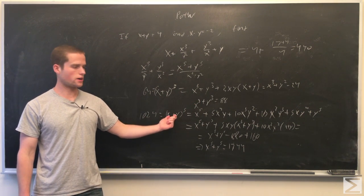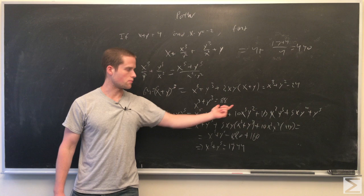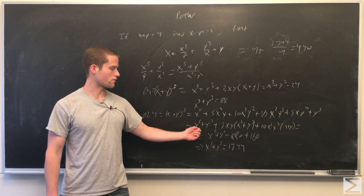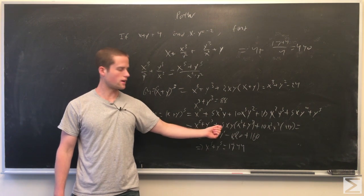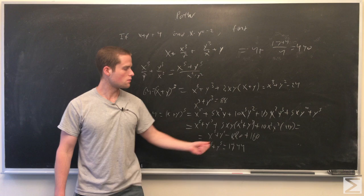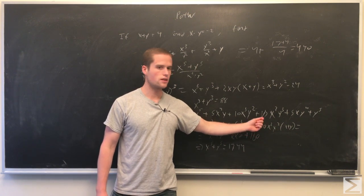Next we're going to take the fifth power of x plus y, so that gives us some terms. Grouping them together we get x to the fifth plus y to the fifth plus 5xy times x cubed plus y cubed plus 10x squared y squared times x plus y.